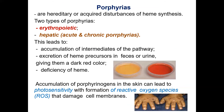Disorders due to abnormalities in the pathway of heme synthesis are called porphyrias. Porphyrias result in the accumulation of one or more porphyrin precursors, depending on the location of the block in the heme synthesis pathway.